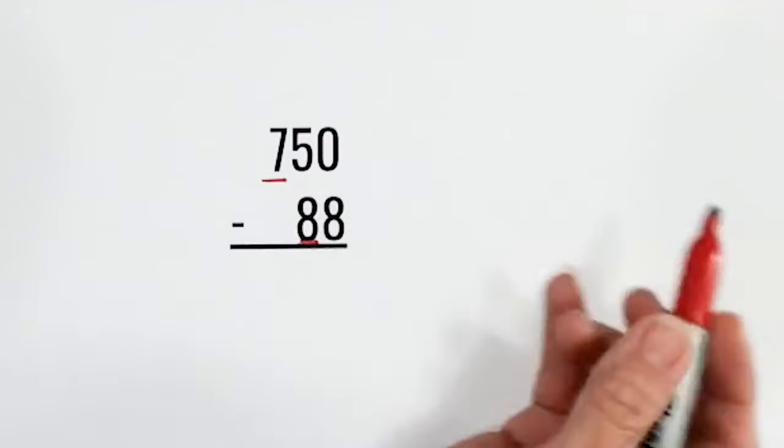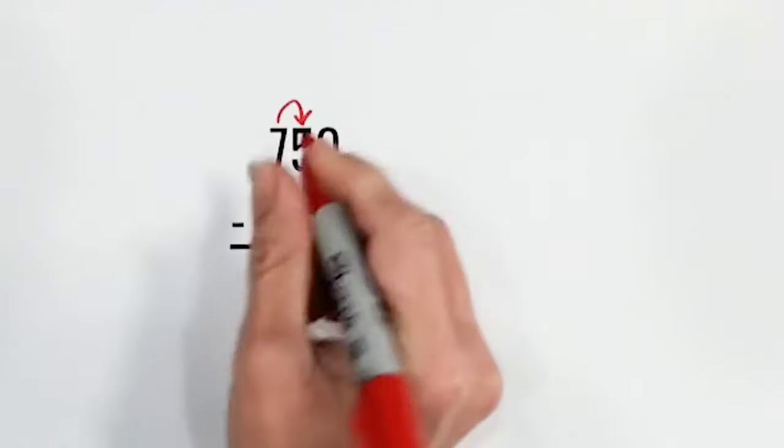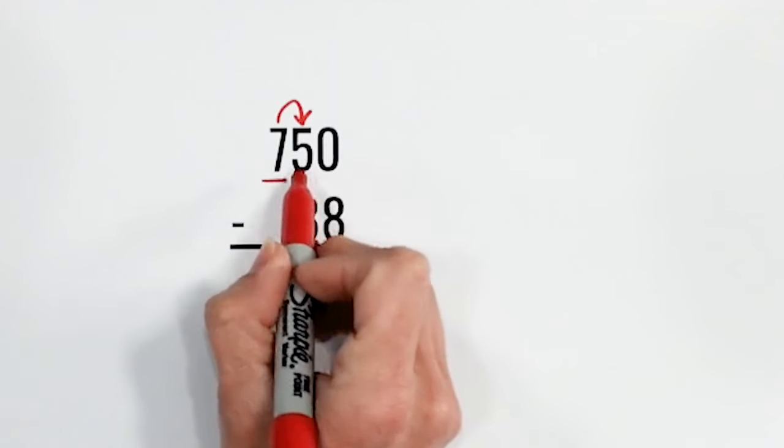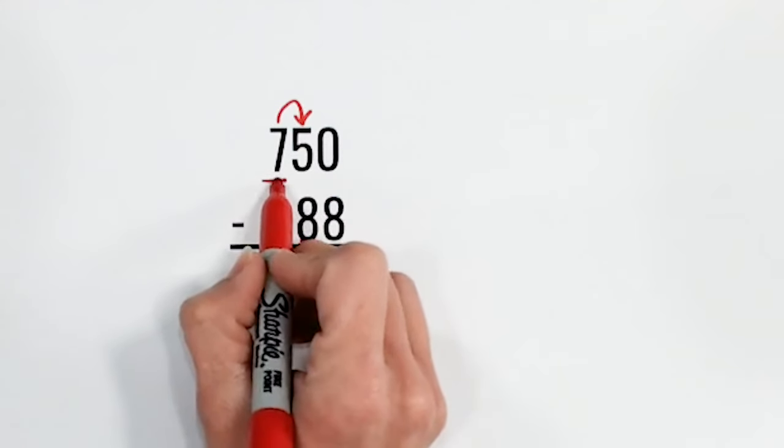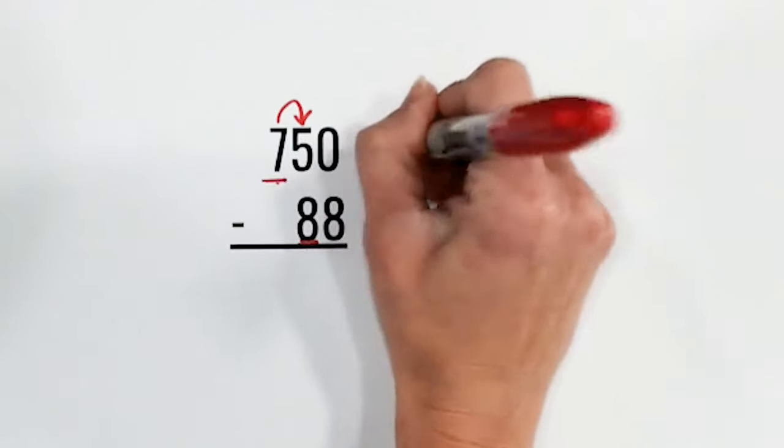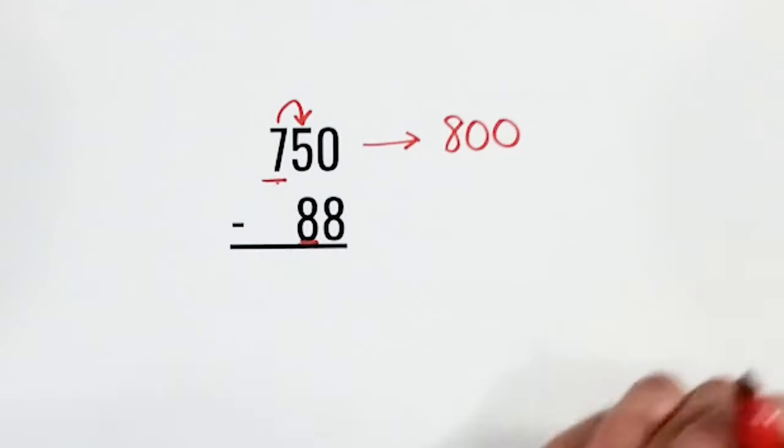So if we're rounding 750, we're looking at the number next door, which is 5. 5 or more, raise the score. So we're going to round up and this 7 becomes an 8. So 750 rounds to 800. And we can see that that's a little high because 750 is in the middle of 700 and 800.